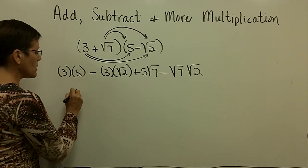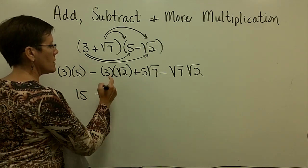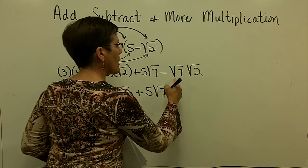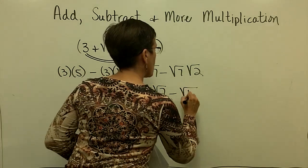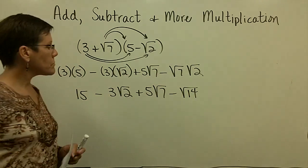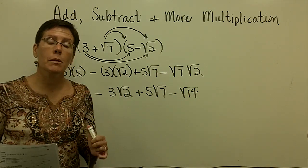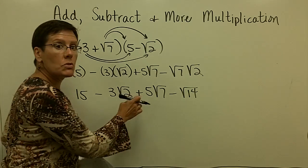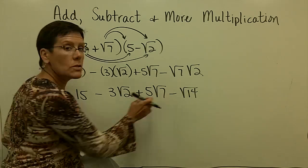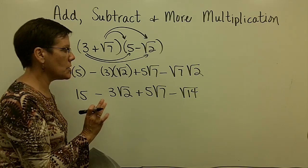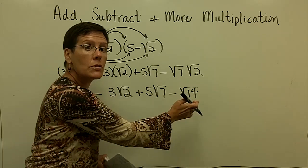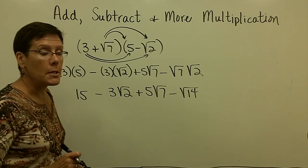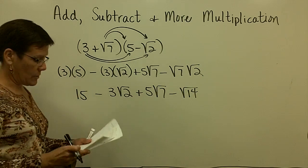So cleaning that up: we have 15, minus 3 times the square root of 2, plus 5 times the square root of 7, minus the square root of 14. Not one of these can be combined — sometimes they can, but not here. These are not like terms: one has a square root of 2, one has a square root of 7. I can't combine their coefficients, and I can't reduce the square root of 14 because 7 and 2 are its only factors. That is my answer.